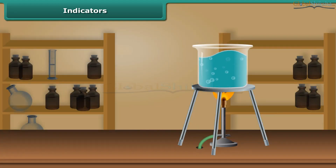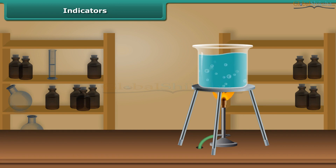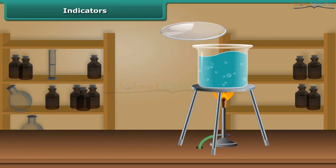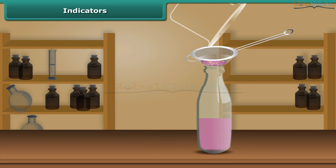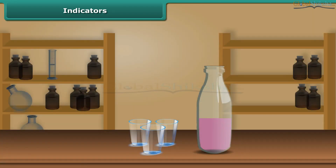Pour some distilled water in a beaker and heat it on the gas stove until the water becomes warm. Then add petals of china rose to this warm water. Keep the mixture for some time till the water becomes colored. Filter this purple-red water into a bottle with a tea strainer. This purple-red solution is your indicator.